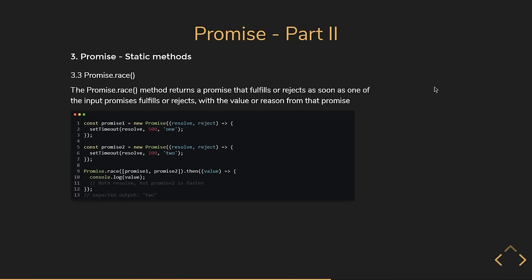The next method is Promise.race. This method returns a promise that fulfills or rejects as soon as one of the promises fulfills or rejects, with the value or reason from that promise. In the example, even though both promises resolve, promise2 resolves in 100 milliseconds whereas promise1 resolves in 500 milliseconds — so Promise.race logs the string '2'. Promise.all, Promise.allSettled, and Promise.race are static methods to keep in mind for an interview.